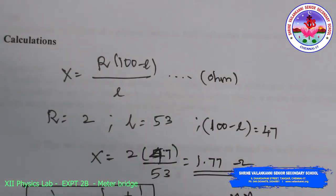For your convenience, I have calculated for one ohm. X equals R times 100 minus L by L, we know that formula. R equals 2, I have chosen here. L equals 53, so 100 minus L is 47. So X equals 1.77 ohms.